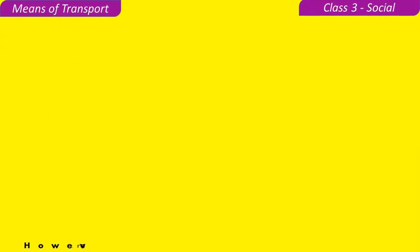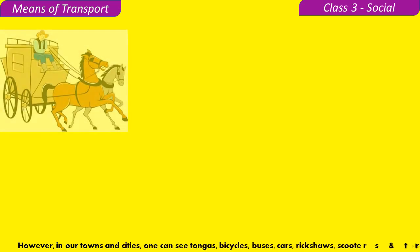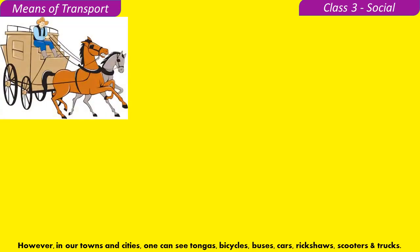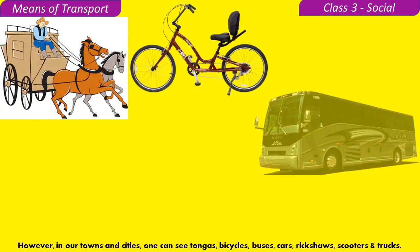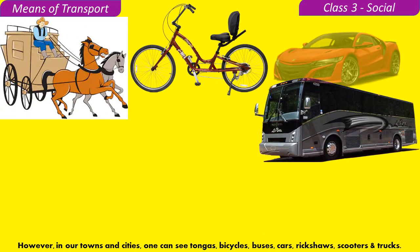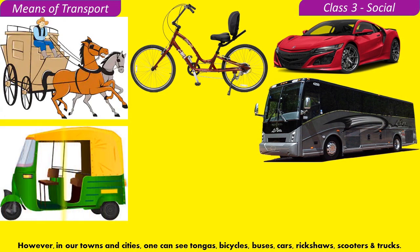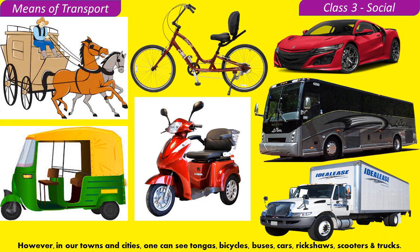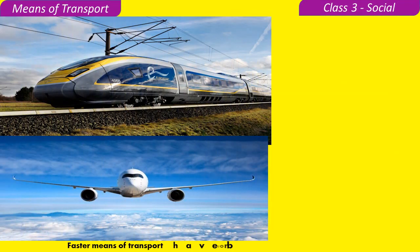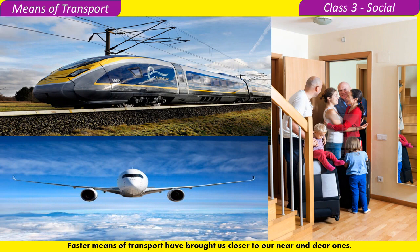In our towns and cities, one can see tongas, bicycles, buses, cars, rickshaws, scooters, and trucks. Faster means of transport have brought us closer to our near and dear ones.